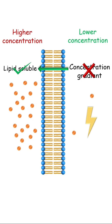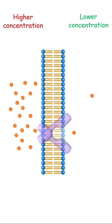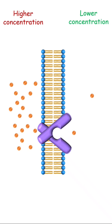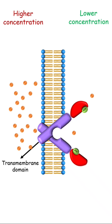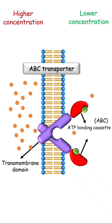This will require energy. So, a transporter here must have a site to bind the energy currency of the cell, ATP, in addition to its transmembrane domain — that is, an ATP-binding domain or cassette, or ABC. This transporter is therefore called the ABC transporter.